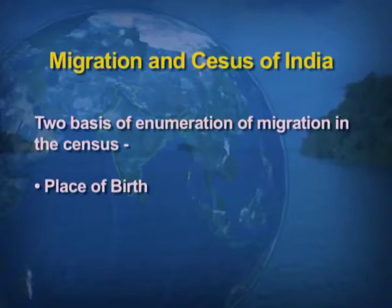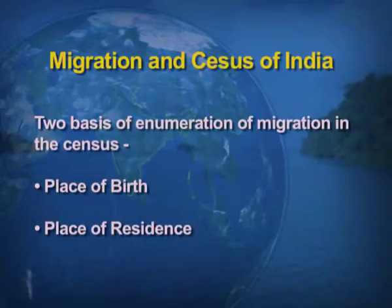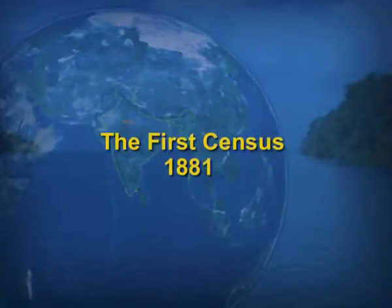Migration and census of India: there are two bases of enumerating migration — one is the place of birth and second is the place of residence. Census data contains migration statistics. The data was first recorded at the time of the first census, conducted in 1881. Later on, with the passage of time, certain modifications were made in the criteria for collecting information about migration.